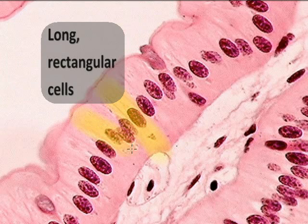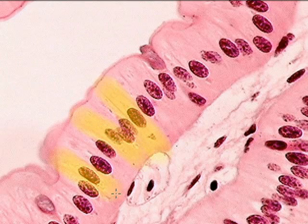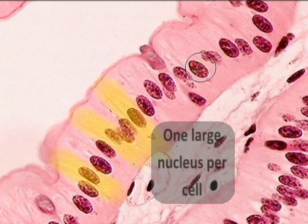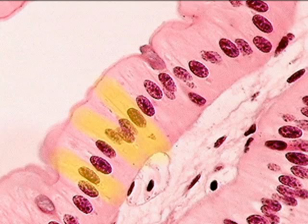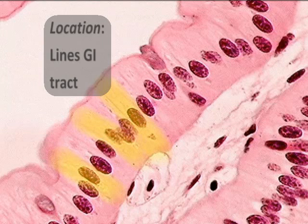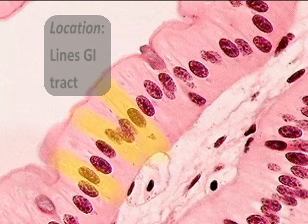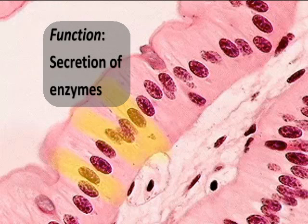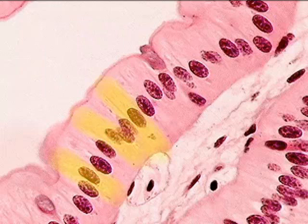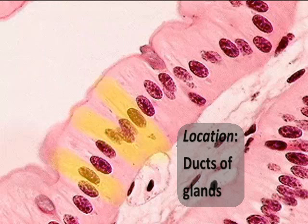Simple columnar cells typically have a large nucleus found commonly near the base of the cell. We can find simple columnar epithelium lining the entire GI tract, from the stomach through the intestines, where it functions in absorption of nutrients and secretion of digestive enzymes. We can also find it forming the ducts of various glands within the body.